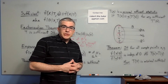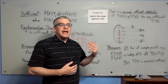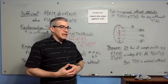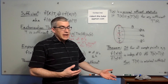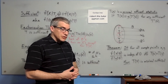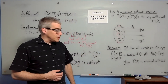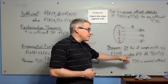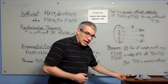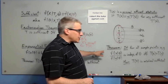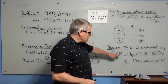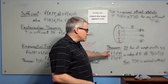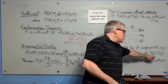Why do we care about minimal sufficient statistics? It means you're not using any more data than you have to — it could also be called a necessary and sufficient statistic. Sufficient means you have enough information from the data that you don't need the rest, and minimal sufficient means you don't have any more data than you actually need. The theorem for checking minimality: if for all sample points x and y, f(x|θ) divided by f(y|θ) is independent of theta if and only if t(x) equals t(y), then t is minimal sufficient.